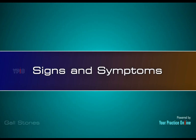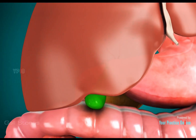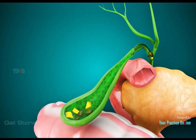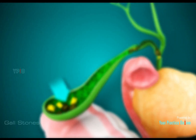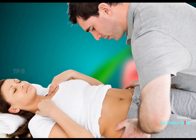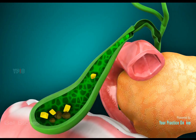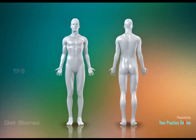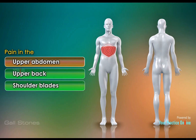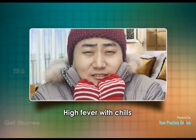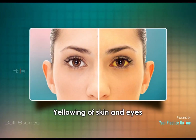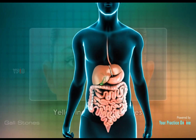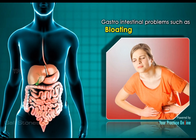Gallstones do not always cause symptoms and are sometimes called silent stones. These are often detected by a physician while diagnosing another condition. However, when a gallstone moves and lodges itself in the bile ducts, it causes signs and symptoms such as pain in the upper abdomen, upper back, and between the shoulder blades, lasting for several hours, nausea and vomiting, high fever with chills, yellowing of skin and eyes, and other gastrointestinal problems such as bloating, indigestion, and heartburn.